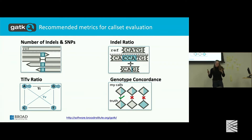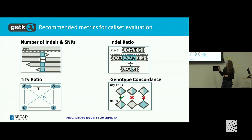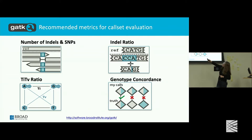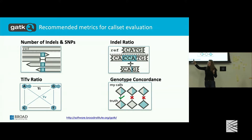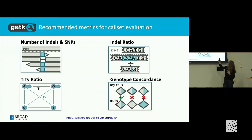So now you kind of know how to make your truth set. Let's talk about the metrics we're going to use. You want to know the number of indels and SNPs, the indel ratio — so insertions over deletions — the TiTv ratio, which is transitions over transversion mutations, and then the genotype concordance. I'm going to dig into all of those.